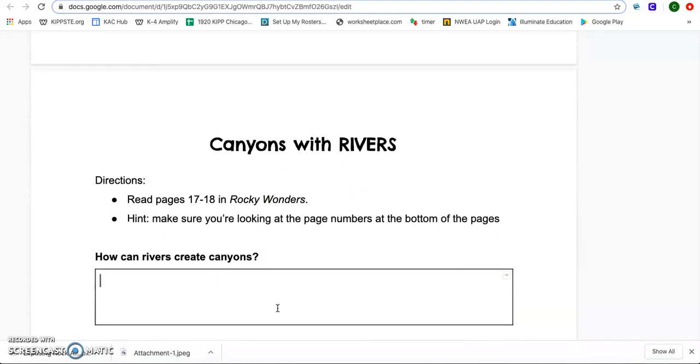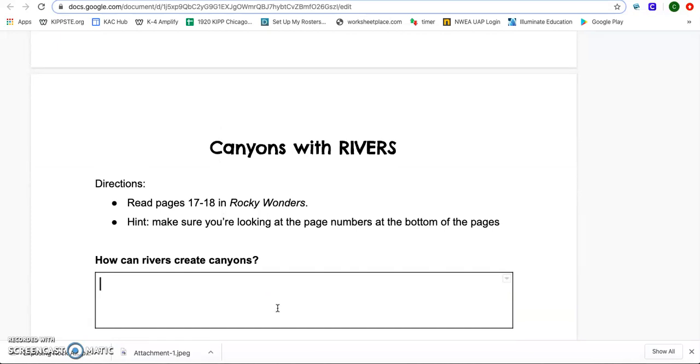And here's our question that we're going to answer together as we read pages 17 and 18 in Rocky Wonders. They're asking us, how can rivers create canyons? As we read pages 17 and 18, we need to constantly be thinking about how rivers are creating canyons. So I have my paper and I have my pencil next to me. And as we read, I'll be jotting down notes to help us answer that question. And I hope that you are doing the same.